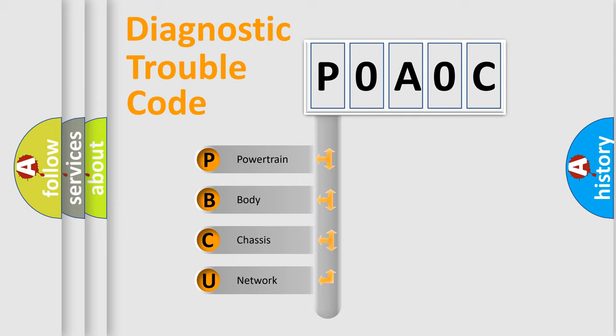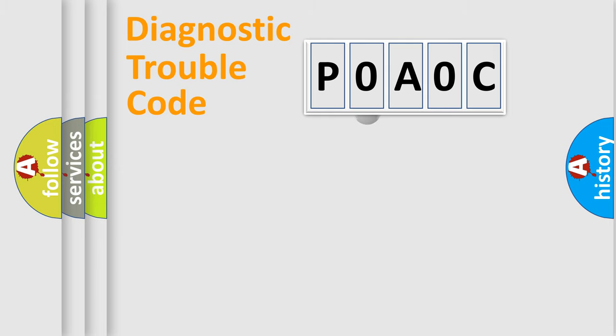We divide the electric system of automobile into four basic units: powertrain, body, chassis, and network. This distribution is defined in the first character code.